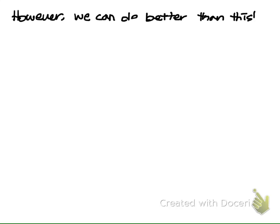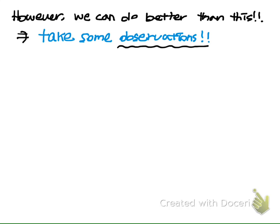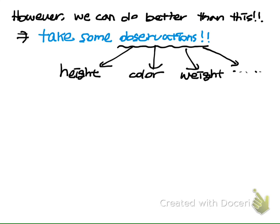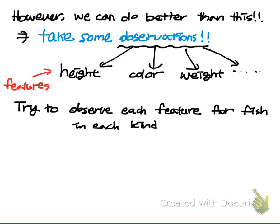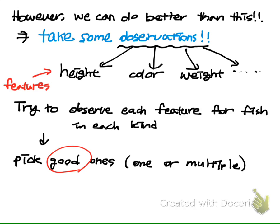However, this is not the best way we can do — we can do better than this. We can take some observations. What I mean by taking observations is we can see how the two kinds of fish differ in height, color, and weight, and so on. All this kind of information can be called features. We can try to observe each feature for each kind of fish and then pick the good ones — one feature or a combination of multiple features.